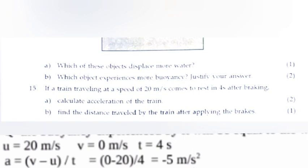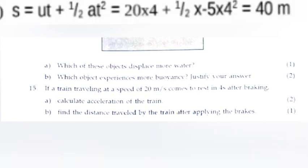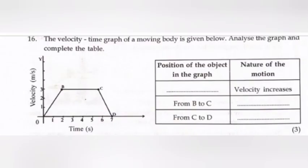Part (b): Find the distance traveled by the train after applying the brakes. Answer: s = ut + ½at² = 20 × 4 + ½ × (-5) × 4². Answer is 40 meters. Question 16: The velocity-time graph of a moving body is given below. Analyze the graph and complete the table. Answer: from A to B, uniform velocity; velocity decreases.